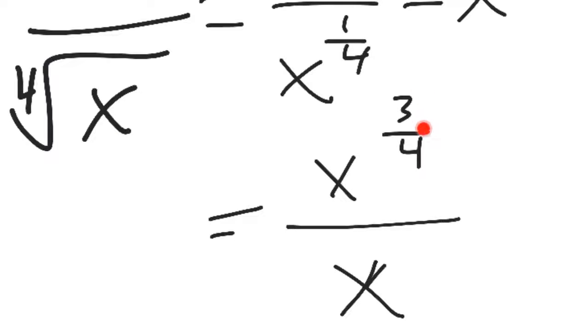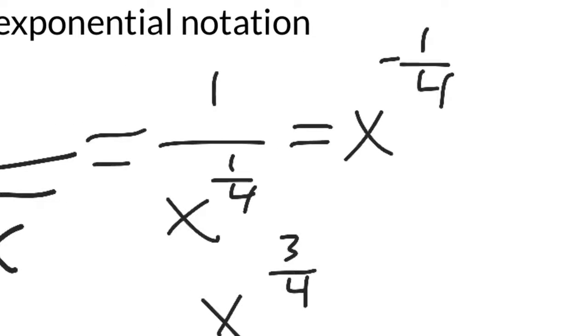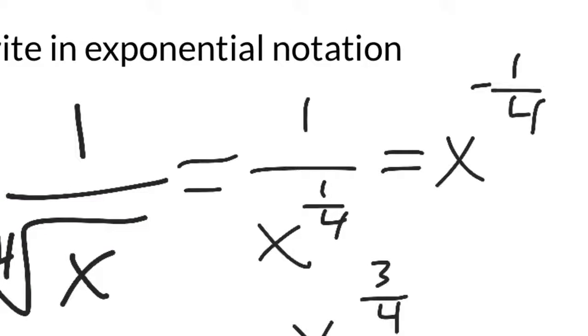Because if you have three-fourths and you divide by x to the one power, three-fourths minus one makes negative one-fourth, the thing that we had over here. But I think your teacher is probably looking for something like this.